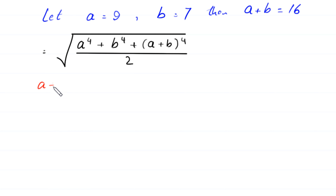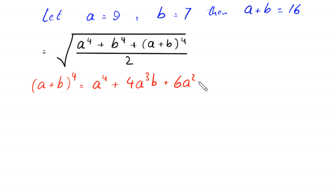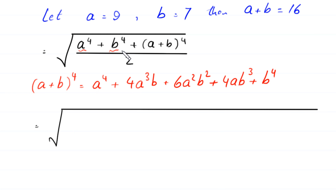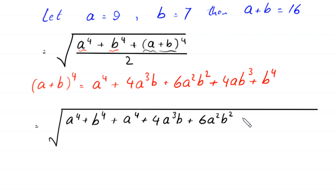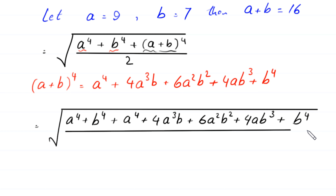By using the algebraic identity, a plus b whole to the power 4 equals a to the power 4 plus 4 times a cubed b plus 6 times a squared b squared plus 4 times a b cubed plus b to the power 4. The expression becomes: square root of a to the power 4 plus b to the power 4, plus a to the power 4 plus 4 times a cubed b plus 6 times a squared b squared plus 4 times a b cubed plus b to the power 4, divided by 2.